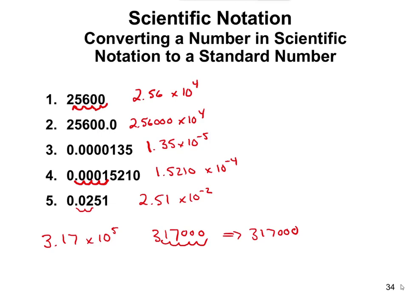If you had a smaller number like 4.61 times 10 to the negative 3, you do the same thing. Write 4.61, and for the negative 3 you move the decimal point the other direction — one, two, three times — fill in those extra spots with zeros, and that gives you 0.00461. I always like to put the zero in front of the decimal point just to make it stand out, so it doesn't look like a random dot. But in terms of reading that number, it's still point zero zero four six one.